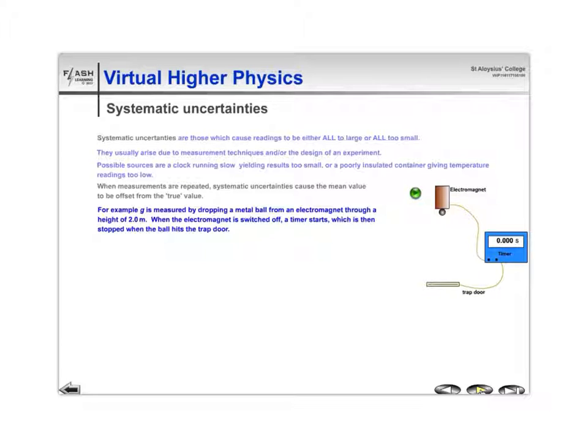When measurements are repeated, systematic uncertainties cause the mean value to be offset because it's the same uncertainty each time. It's not changing like a random one is.